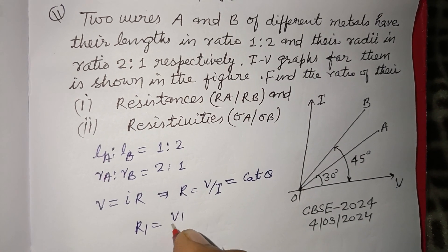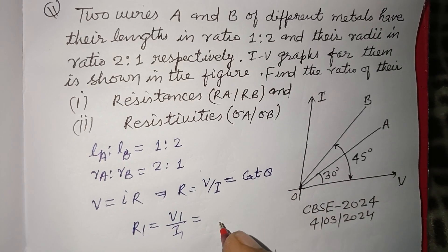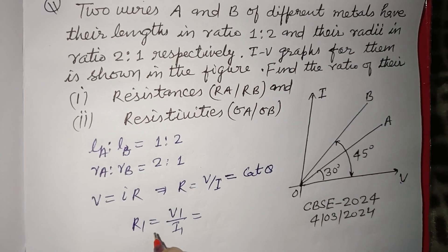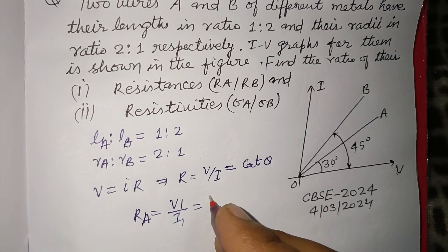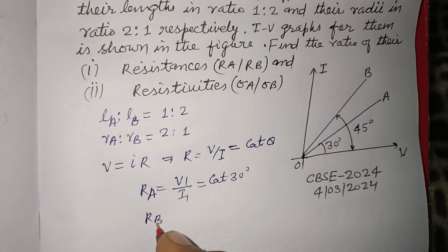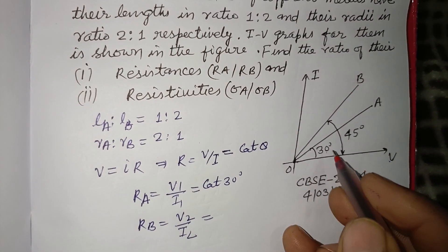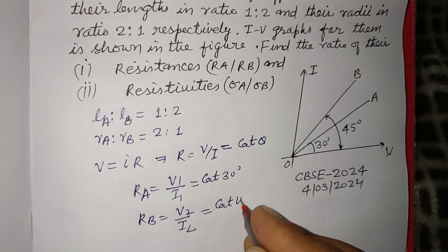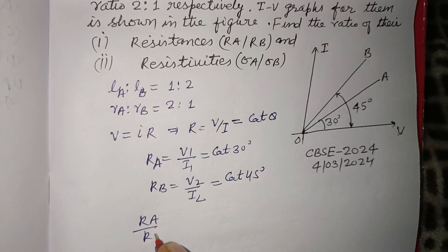For wire A, RA = V1/I1 = cot 30°. For wire B, RB = V2/I2, which is given as 45°, so cot 45°.